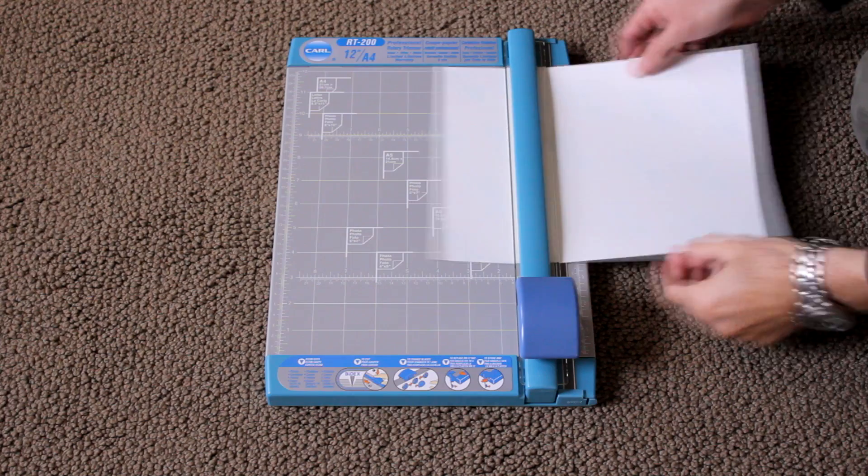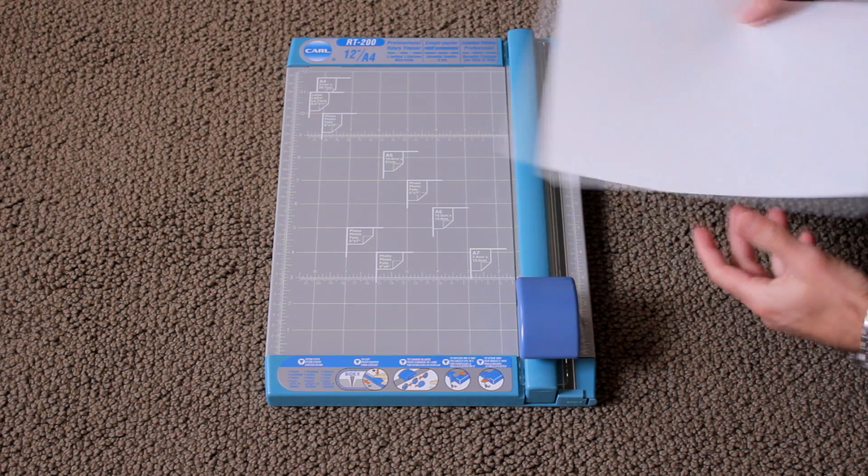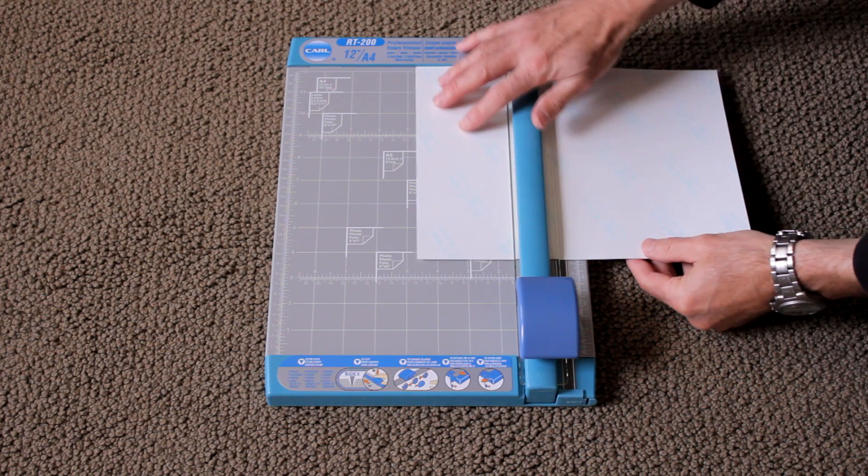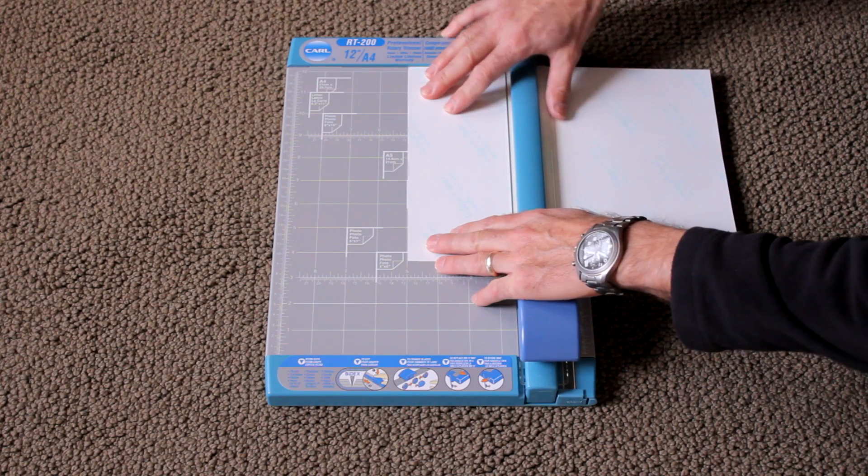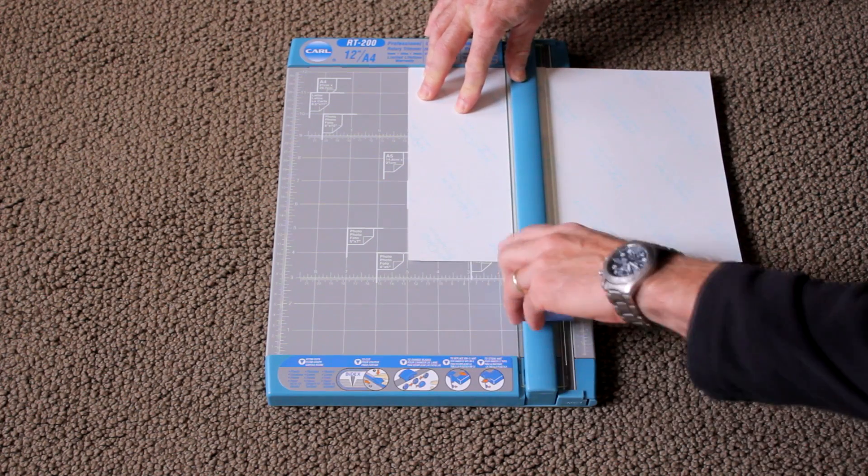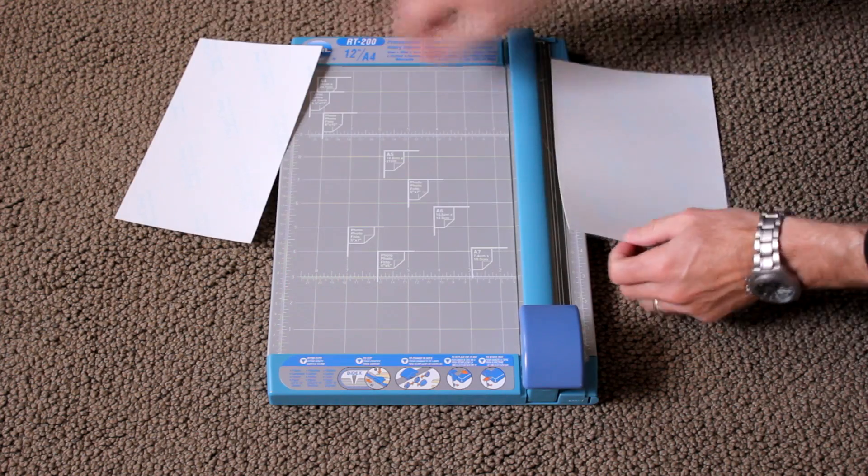This waterslide decal paper comes in 8.5x11 sheets, which I'm going to divide into three pieces. The smallest size my inkjet printer can use is a 4x6, so I'm going to cut this on my rotary trimmer into a 5x8.5, which I could later use as a 5x7 by trimming off the edge, and two 4x6s.